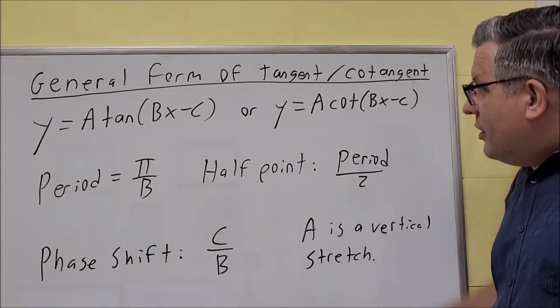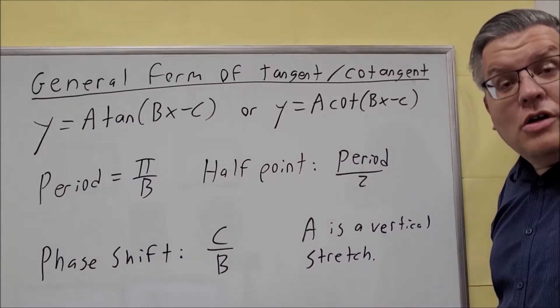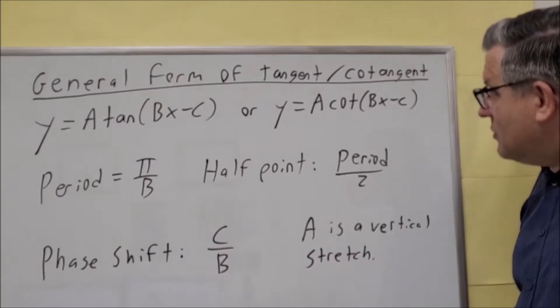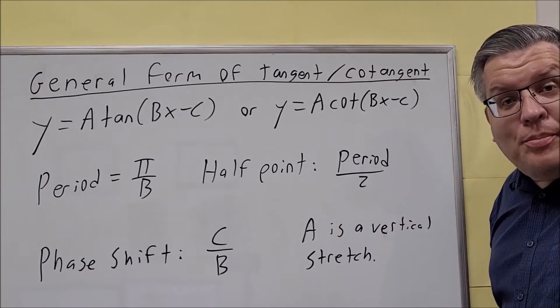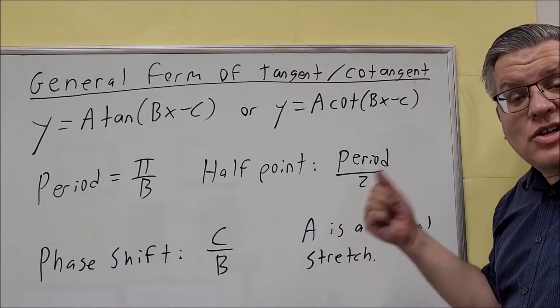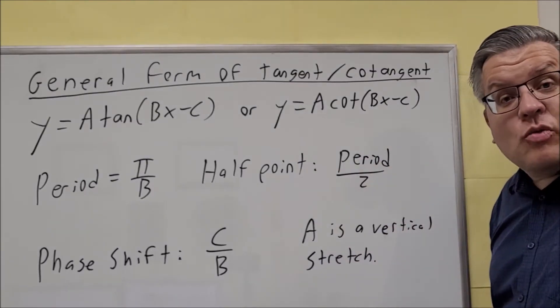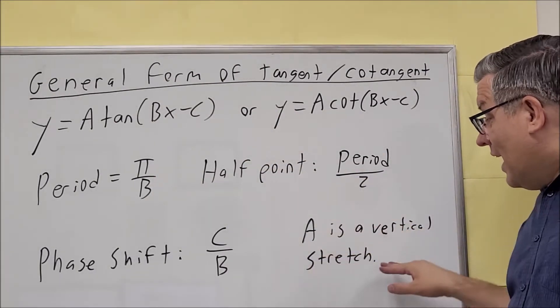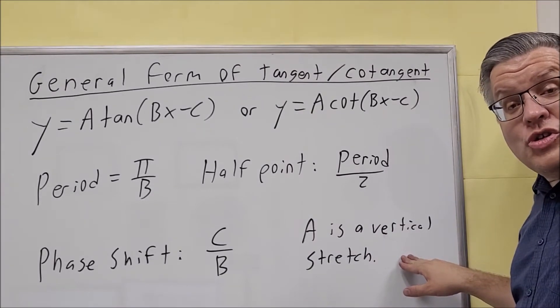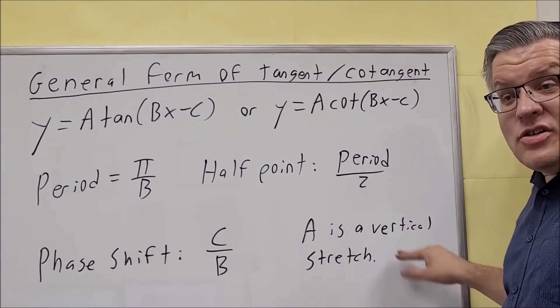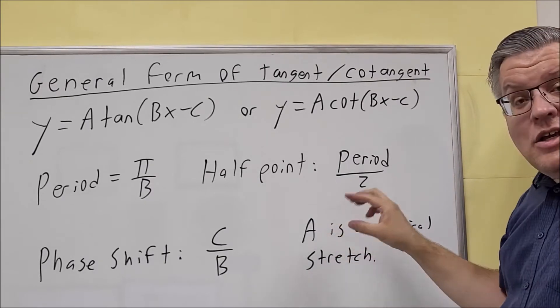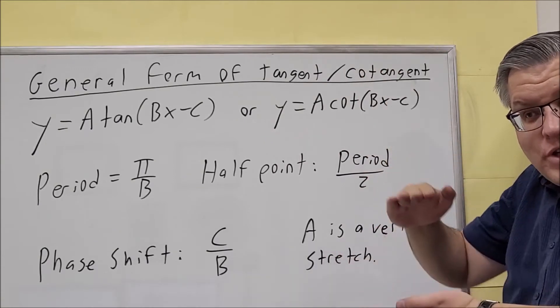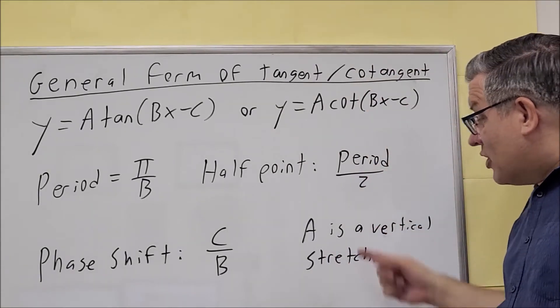So the b and the c are going to be familiar to you from what they were with the sine and the cosine graphs. Now we have an a that's out front, but this is unlike the sine and cosine. This is not the amplitude. The reason why is because tangent and cotangent, they actually do not have an amplitude. Instead, the a is actually going to be a vertical stretch. So if a is larger, it stretches it in this direction. If a is a fraction, like between 0 and 1, then it kind of compresses the graph down and squishes it. So that's what the a value does.